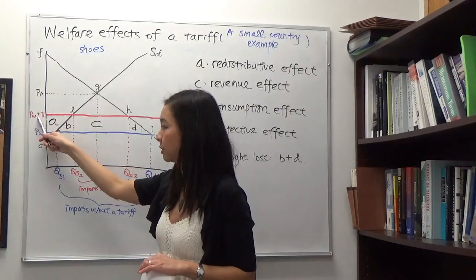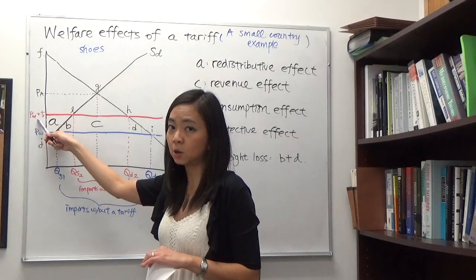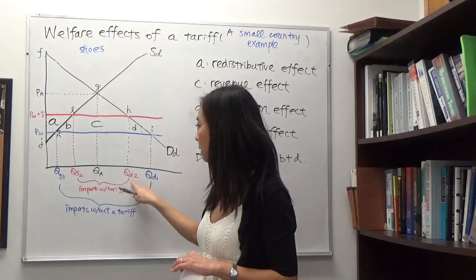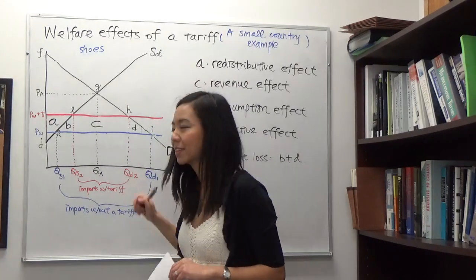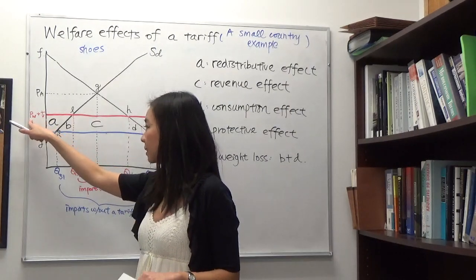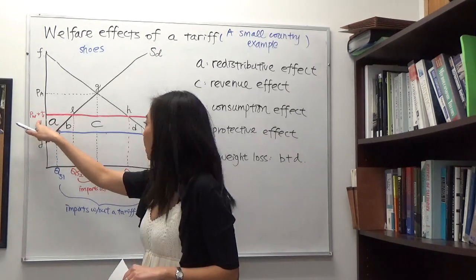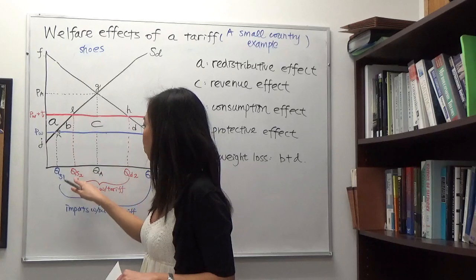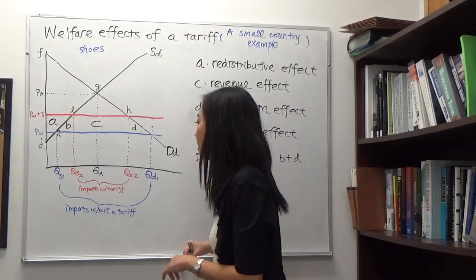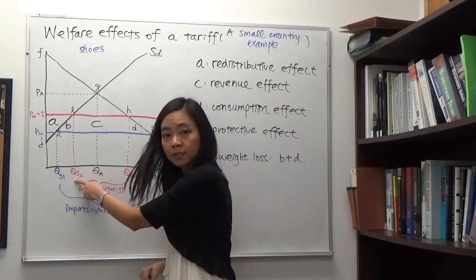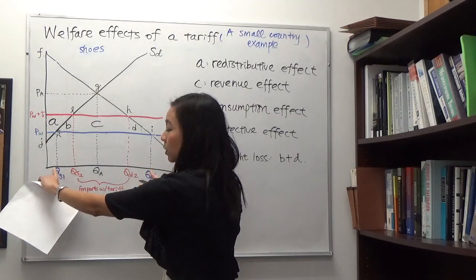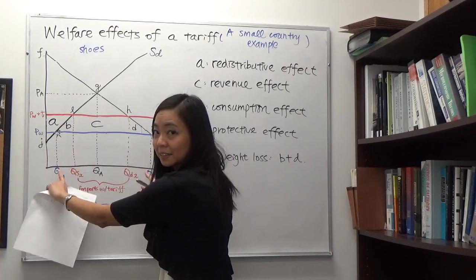Given the new price with the tariff, the quantity demanded locally is QD2. Given that the price is now PW plus T, local producers are willing and able to produce QS2 pairs of shoes. Quantity demanded is still higher than quantity supplied even with the tariff, but the difference is smaller than before, meaning we are going to import less than before.